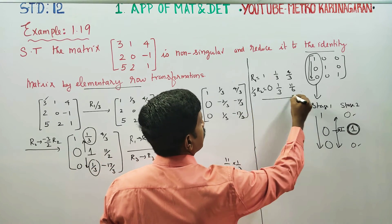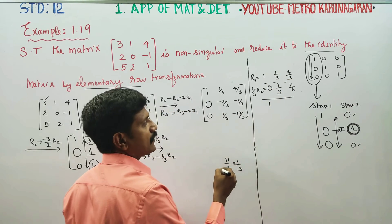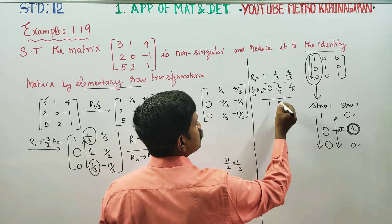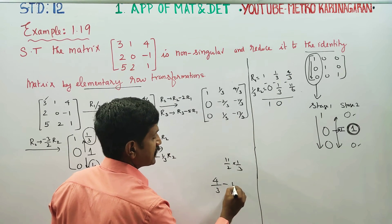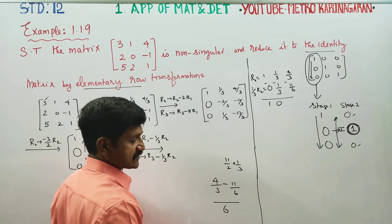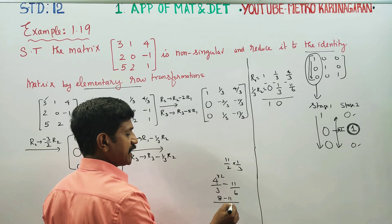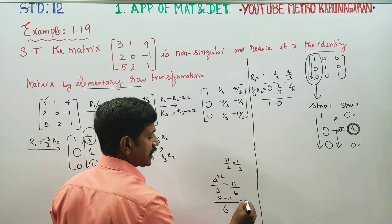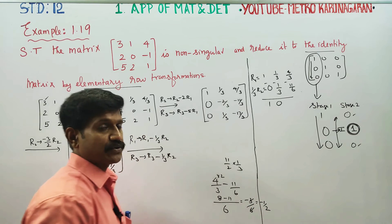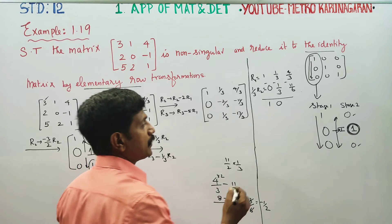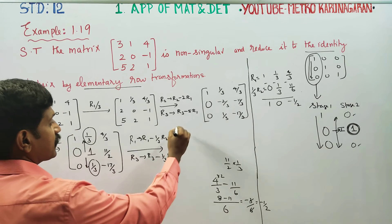Continuing the subtraction: you get minus 3 over 6. Cancelling 3, you get minus 1/2. So the updated R1 first entry minus 1/2. Therefore the new R1 is: 1, 0, minus 1/2.